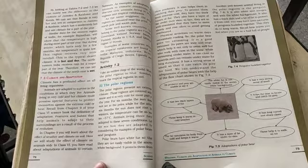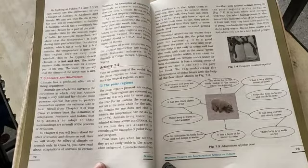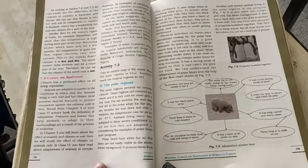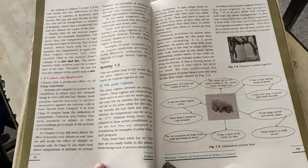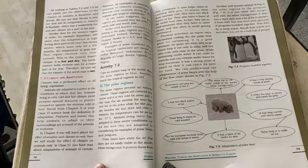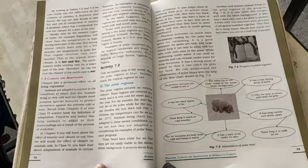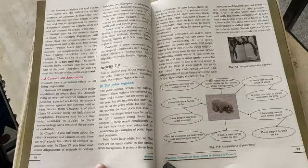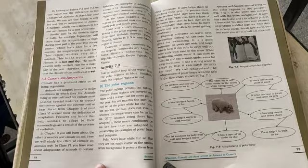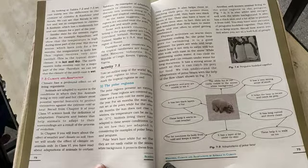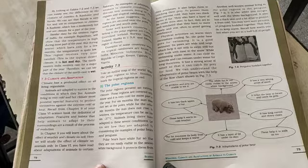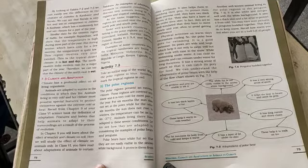So what happens? These polar bears actually live in the polar region, and polar regions have different climatic conditions. These regions are always covered in snow and it is very cold for most part of the year. For six months, the sun does not set at the poles, whereas for the next six months, the sun does not rise.